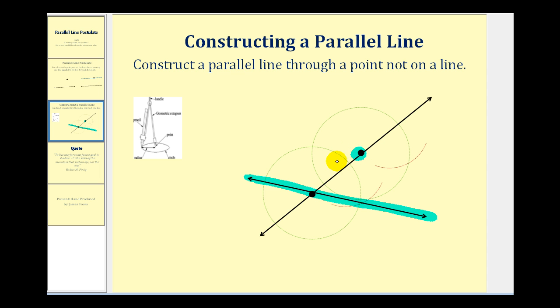the first thing we'll do is sketch this black line that intersects the given line and passes through the given point. So now we have two intersecting lines with a point of intersection and the original point.